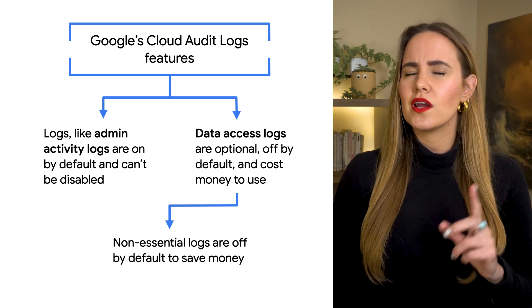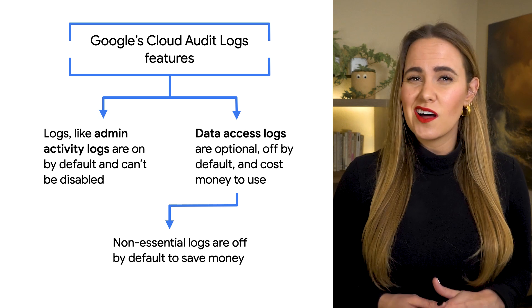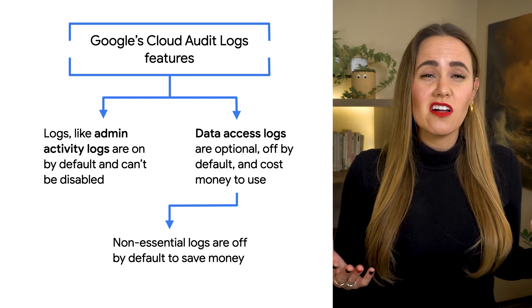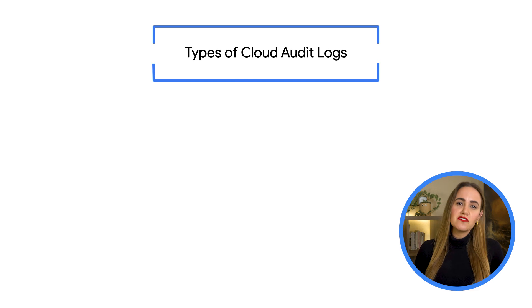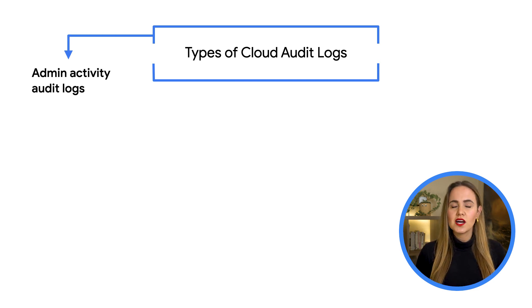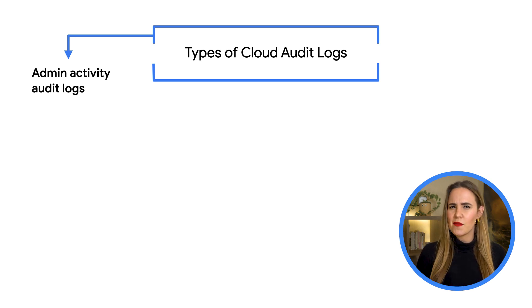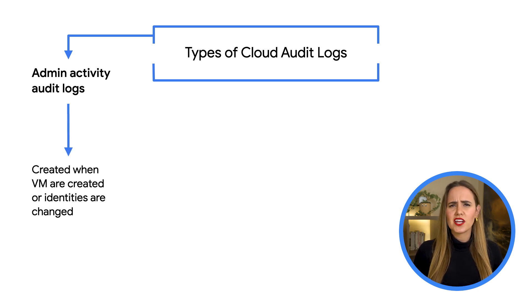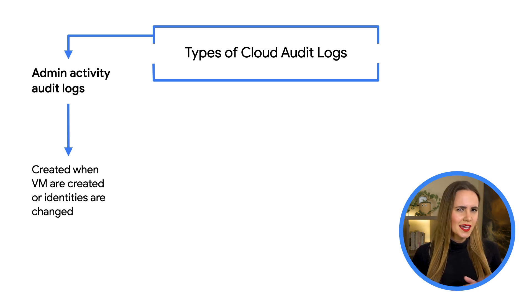But depending on what you need, Cloud Audit Logs provide many customization options to suit an organization and fulfill all their security logging needs. These include admin activity audit logs, which cover API calls and admin actions that modify how metadata for resources is configured. Whenever VM instances are created or identities are changed, a log record is kept. These logs are automatically kept, don't cost users anything, and can't be disabled.